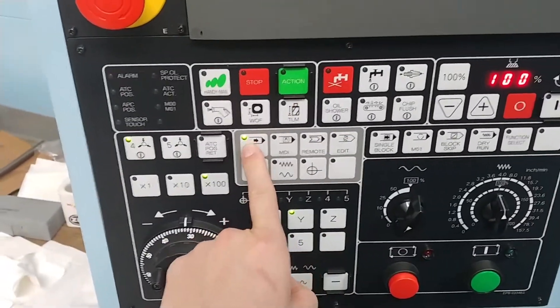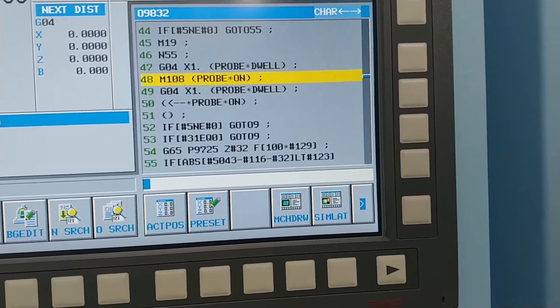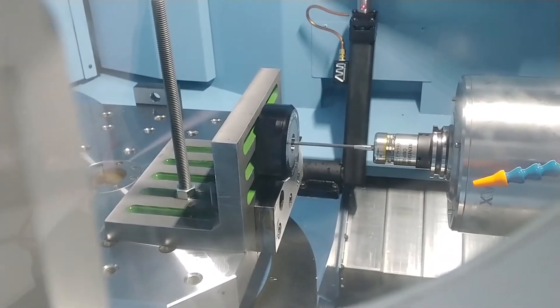Put the machine in memory mode and press Cycle Start to run the program. The machine will begin probing the ring gauge. Once the cycle is completed, the probe is calibrated in the X and Y directions.